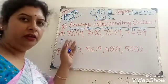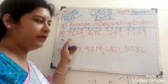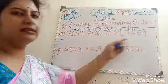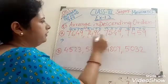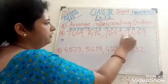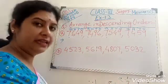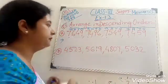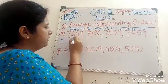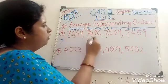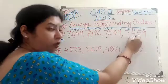Now in the 1,000 place, all the numbers are 7 — same: 7, 7, 7, 7. So we observe the next place value, 100. In the 100 place values: here it is 6, 4, 5, 4.